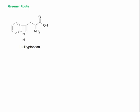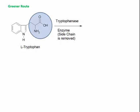In the greener route, L-tryptophan, which is a naturally occurring substance, is used as a reactant. It is then treated with the enzyme known as tryptophanase. The role of this enzyme is to remove the side chain and we get the next product, that is, indole.